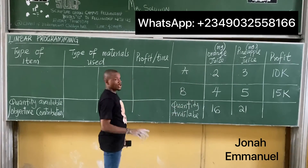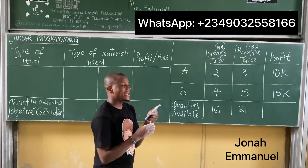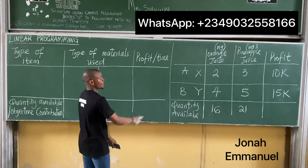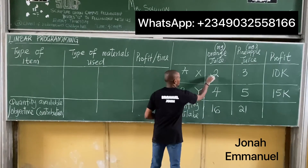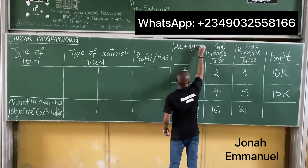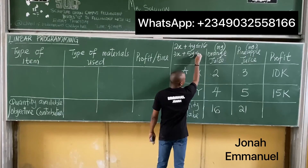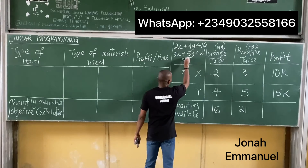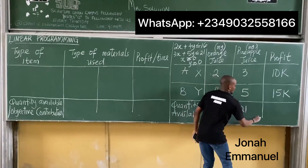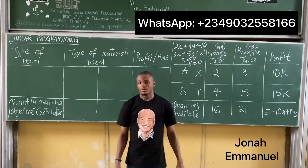If you have this statement, listen. Assume the food vendor makes X liters of A and Y liters of B. For the right-hand inequality: 2X plus 4Y is less than or equal to 16 for orange juice, and 3X plus 5Y is less than or equal to 21 for pineapple juice. So you now have to write these inequalities.